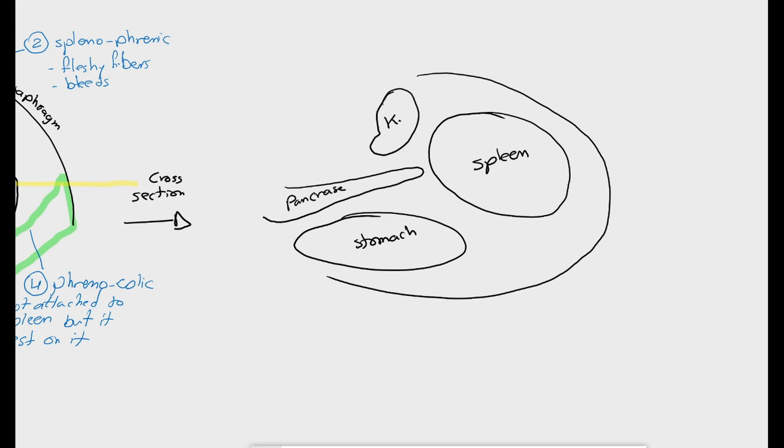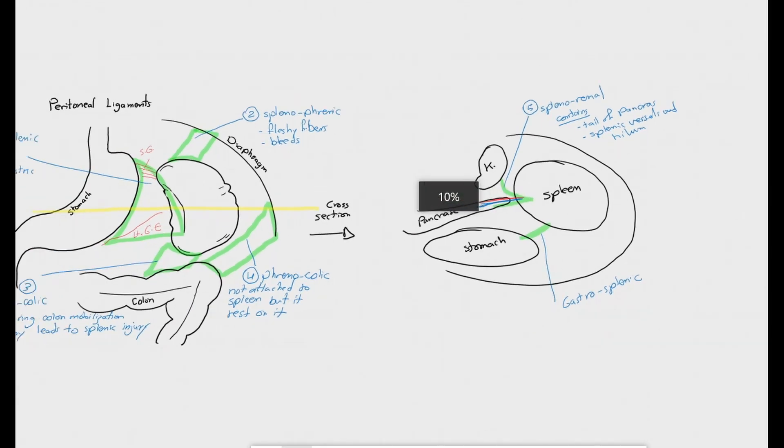This is the gastrosplenic ligament and here behind the peritoneum is reflected on the left kidney and winds back towards the hilum of the spleen. This is again the splenorenal ligament which covers the tip of the tail of the pancreas and the splenic artery and vein. There are more peritoneal ligaments related to the spleen but these five are the most clinically significant ones. So try to remember them.